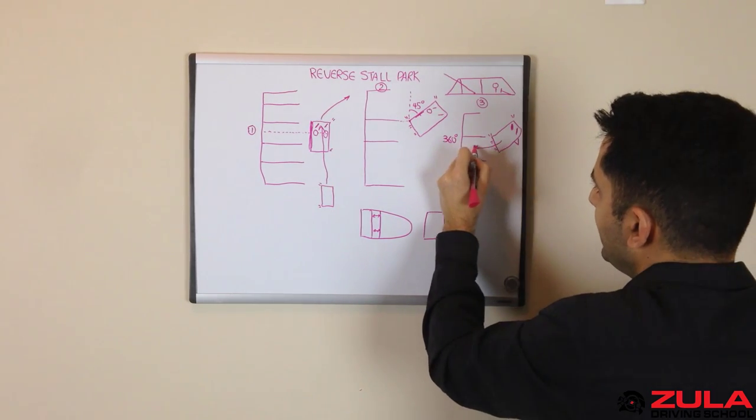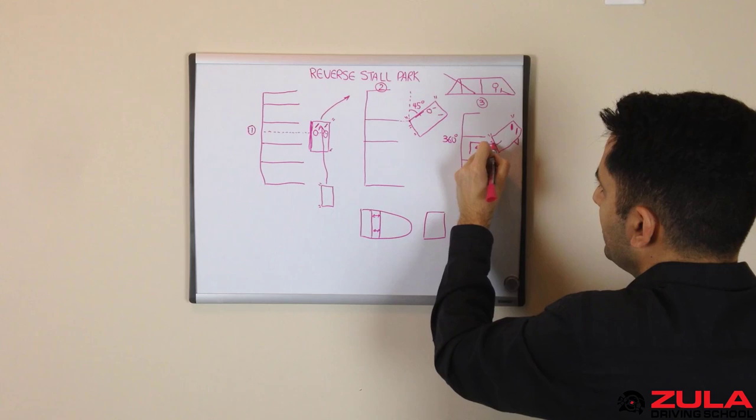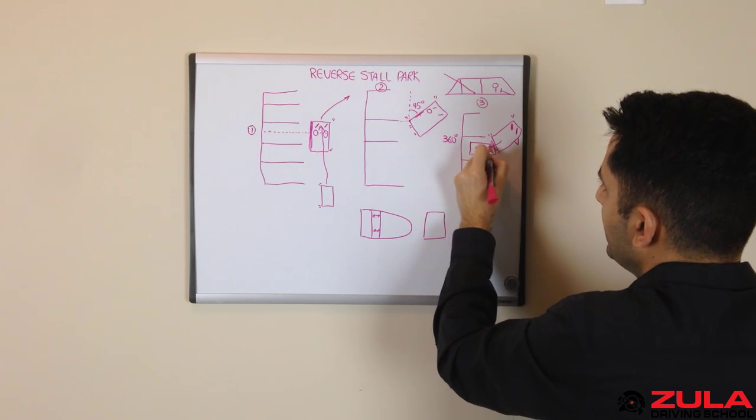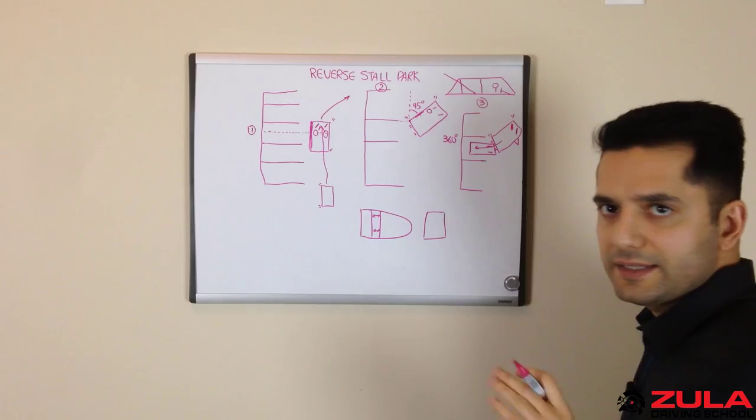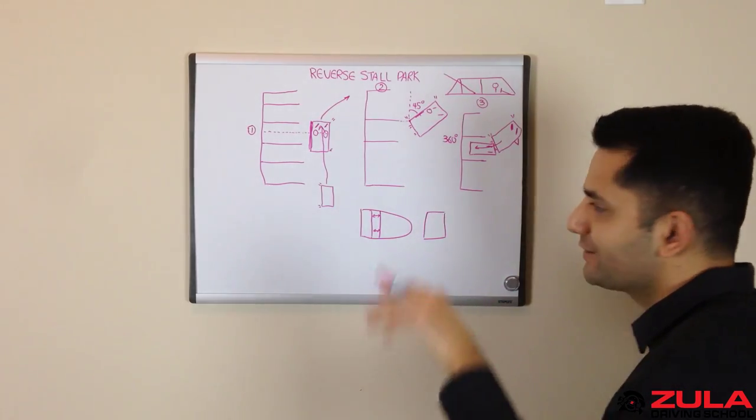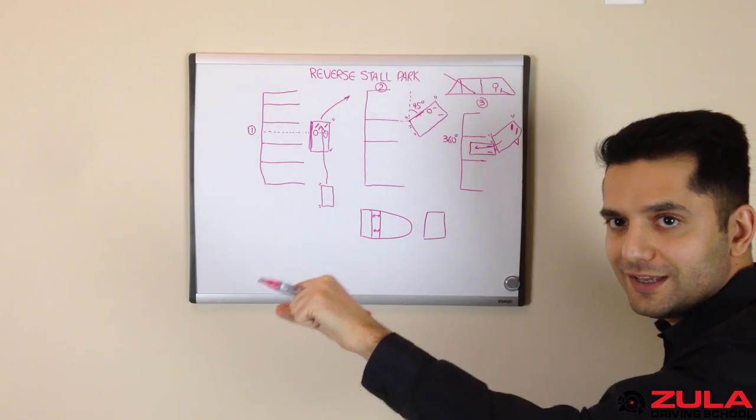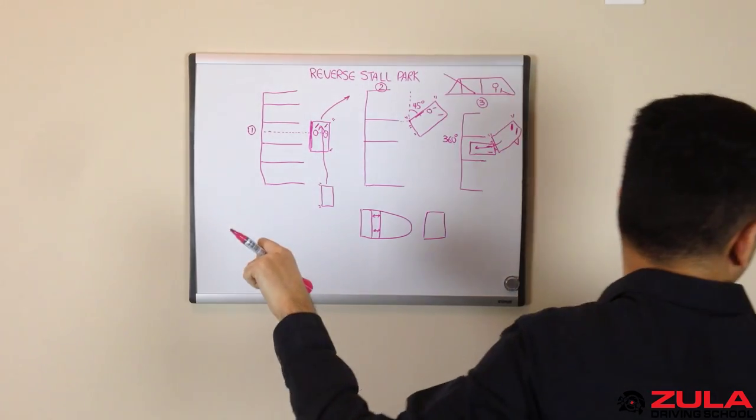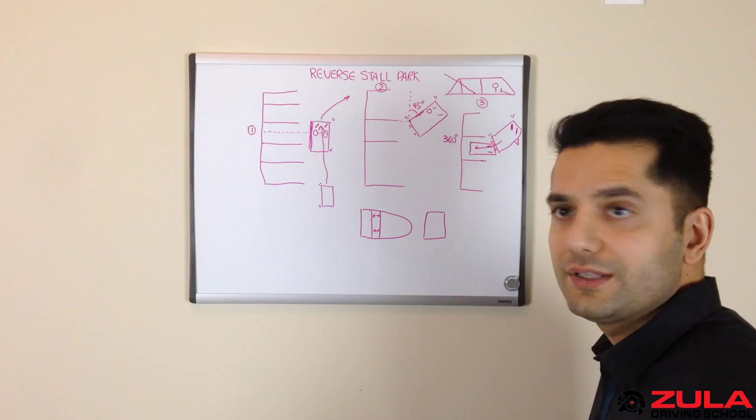So you roll back until you're parallel, and at that point you straighten out your wheel. At this point you don't have to do any more steering, so all you have to do is hold onto the steering wheel in the center position and look behind you and complete your maneuver.